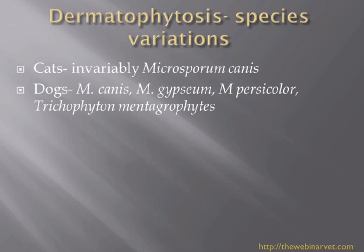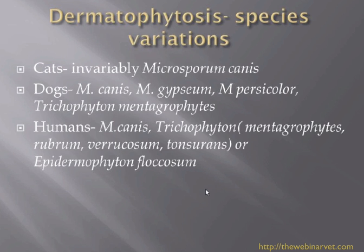Dogs can get a number of species: Microsporum canis, M. gypseum, M. persicolor, and Trichophyton mentagrophytes. Humans can also get a number of species — M. canis we see quite commonly in practice where someone has come in with a couple of cats they've just acquired and they also have lesions. It is well worth asking those questions, and if you have a cat with lesions you obviously need to make owners aware that it is a zoonotic disease and they must be careful.